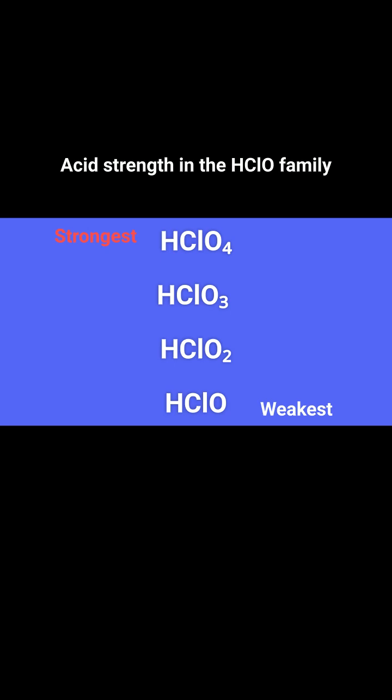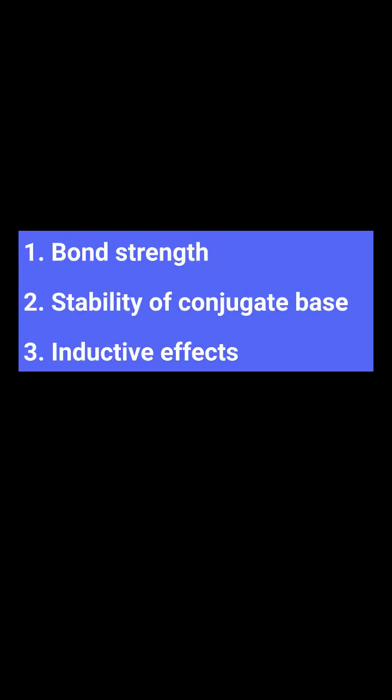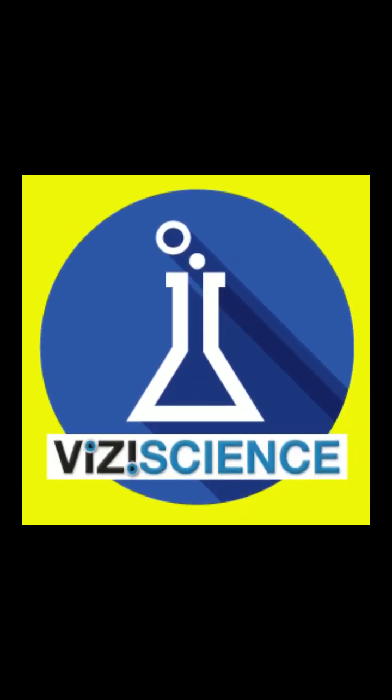To summarize, acid strength is influenced by three main factors: bond strength, stability of the conjugate base, and inductive effects, all determined at a molecular level. Understanding these principles helps explain why some acids are stronger than others and builds a foundation for studying acid-base reactions.